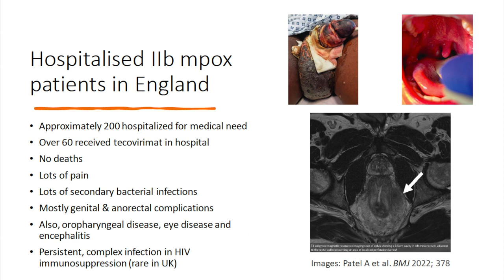In terms of hospitalised cases — we're writing this up now — we still do see severe disease. We had nearly 200 people hospitalised in England and Northern Ireland for medical purposes, with lots of severe pain requiring heavy analgesia, lots of secondary bacterial infections, and antibiotic use. It was mainly genital and anorectal complications that we saw, but also some severe oropharyngeal disease, eye disease, and encephalitis.